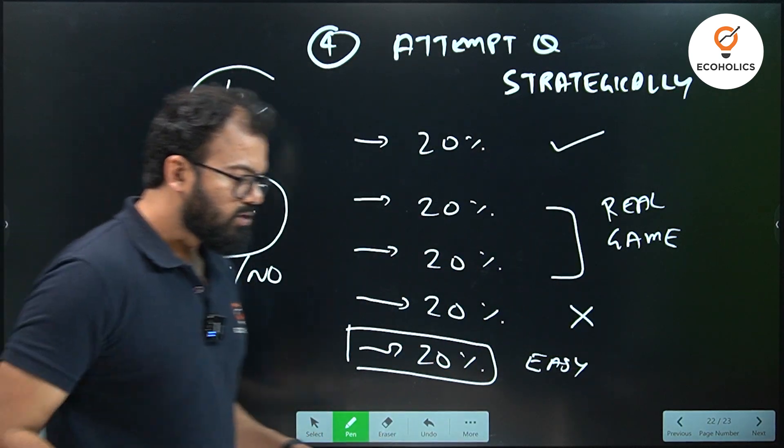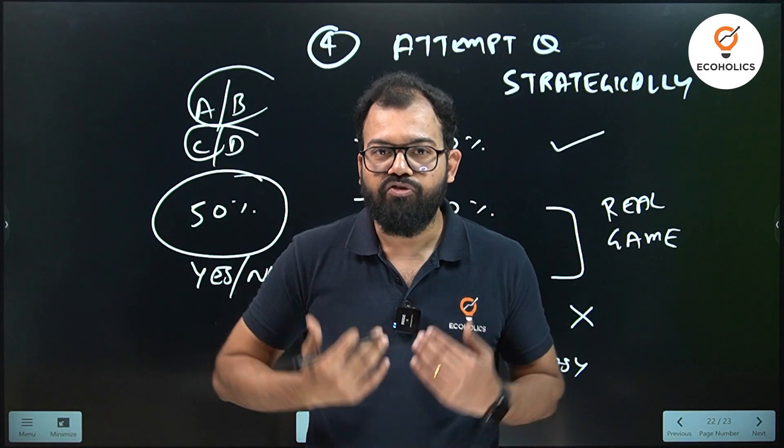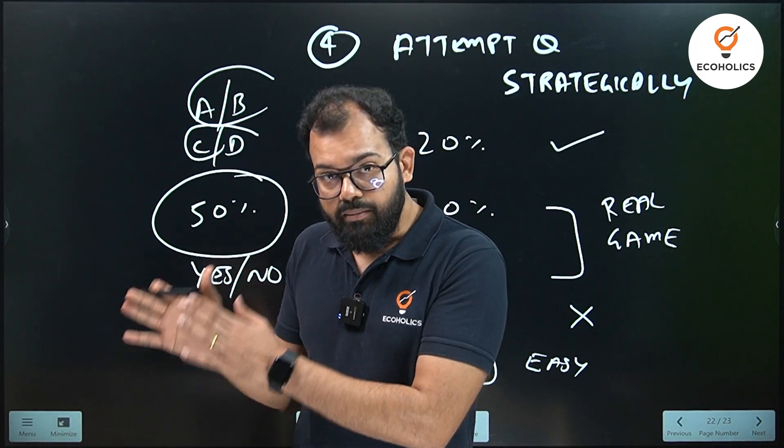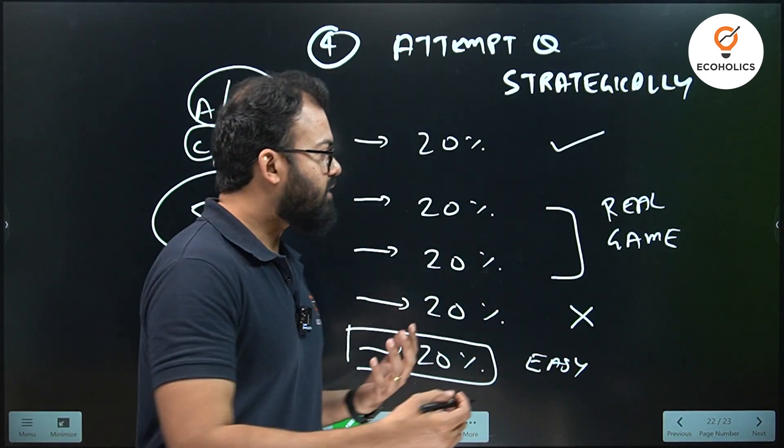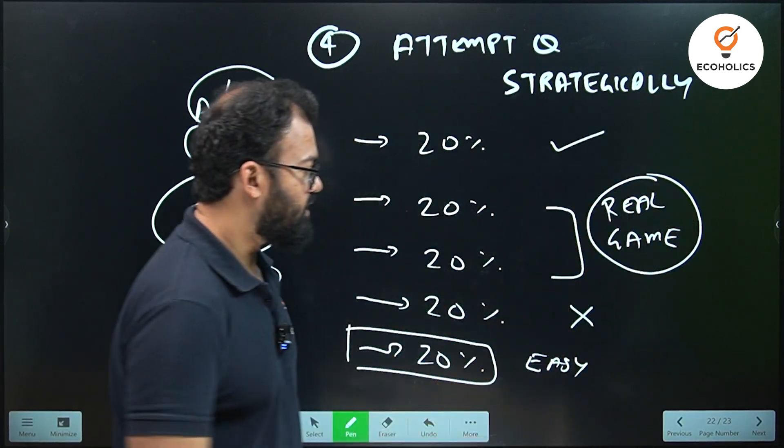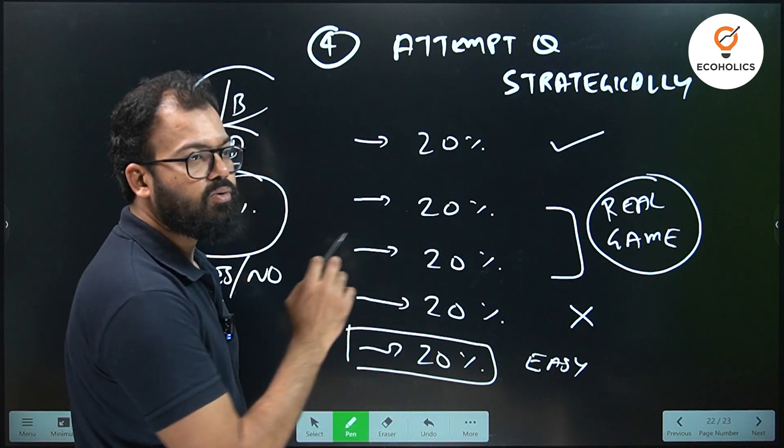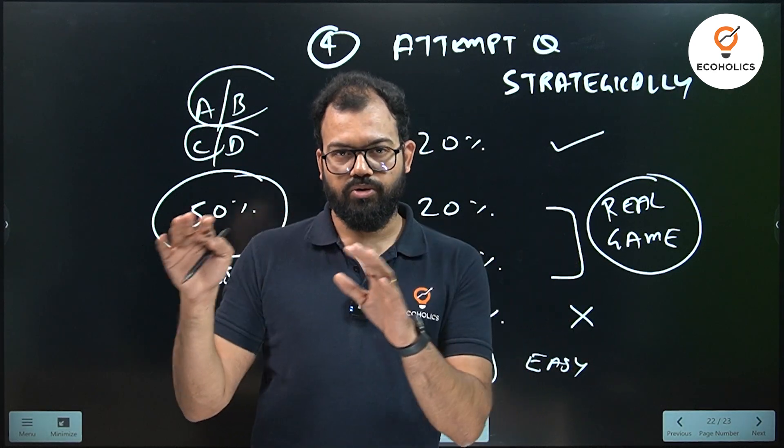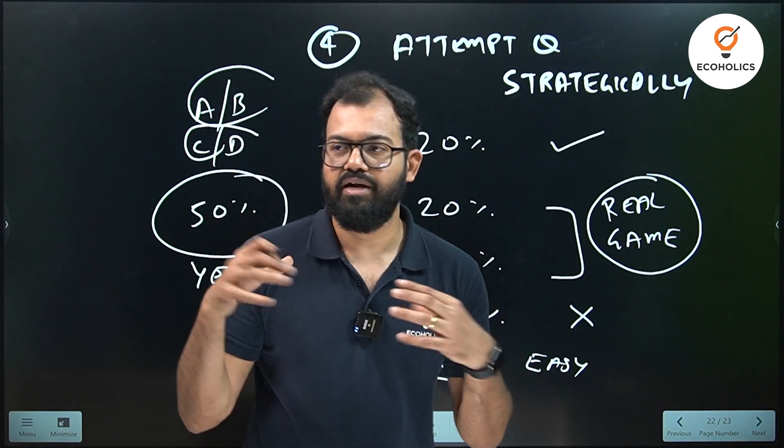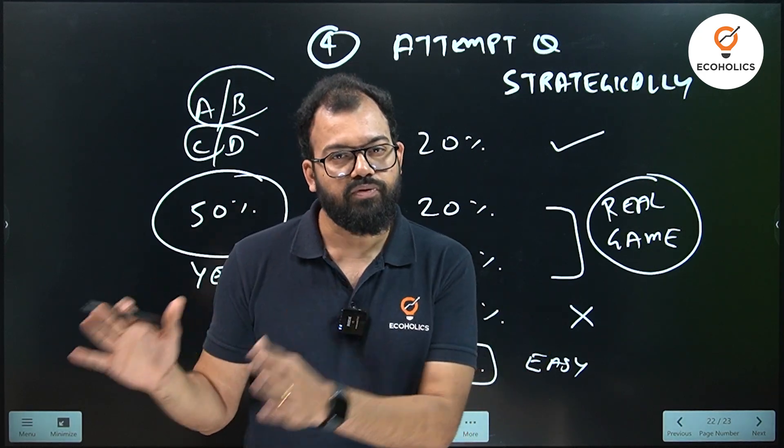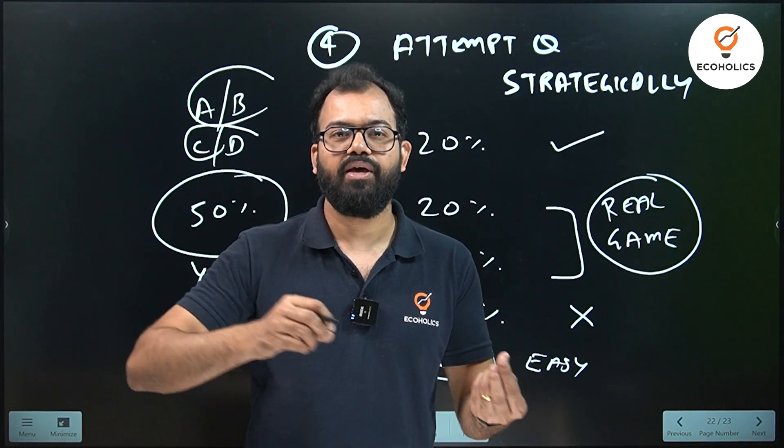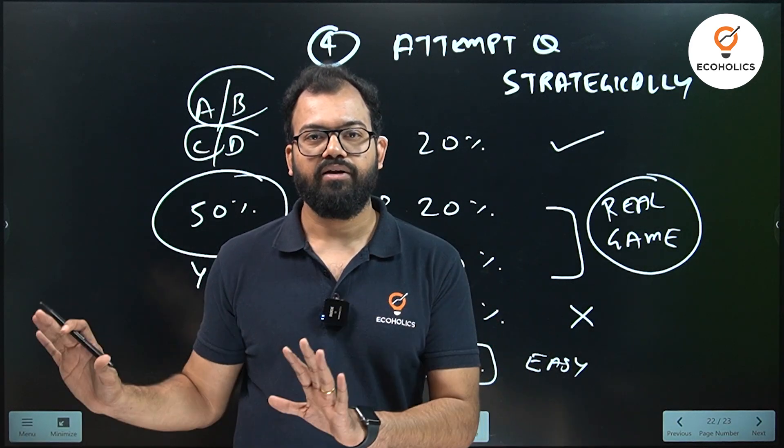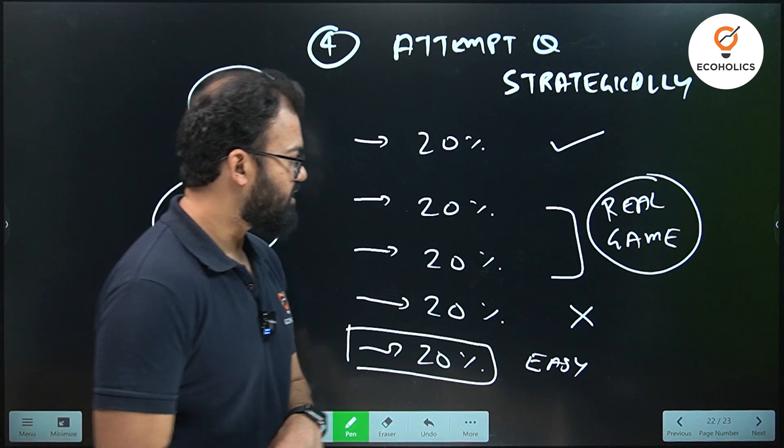Strategically, it is important. Because when we solve those questions which we know firsthand, we generally feel confident. If you attempt those questions where you are comfortable, you will gain confidence. So that real game when you play, you will have the confidence. But if you first encounter these 20% of the difficult questions, then the real game will be defeated. Just skim through the questions. If you think that micro is your strong area, Indian economy is your strong area, money banking is your strong area, do those first. If your strong areas are not environmental economics, not public finance, not international economics, stats, econometrics and all, don't go there in the initial 30 or 45 minutes of your paper.